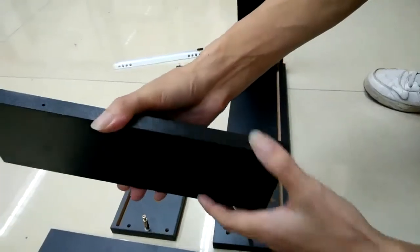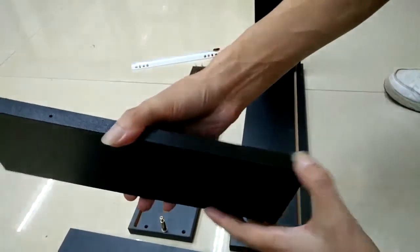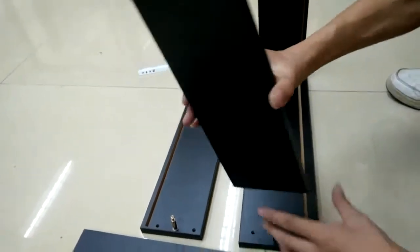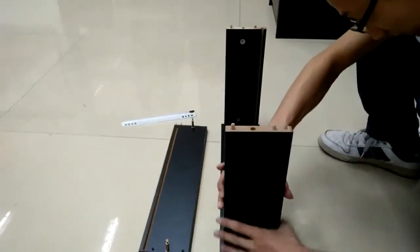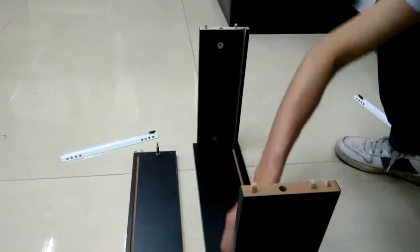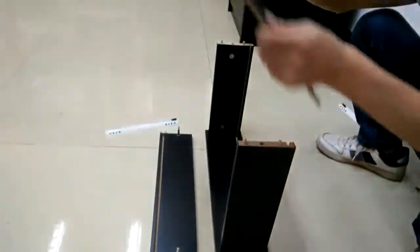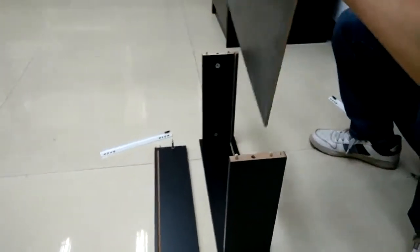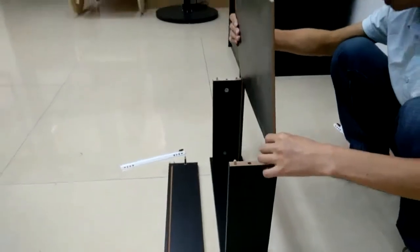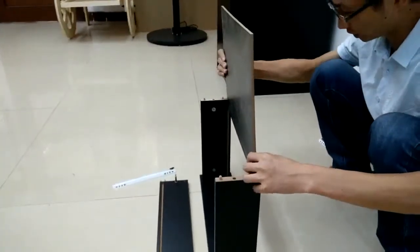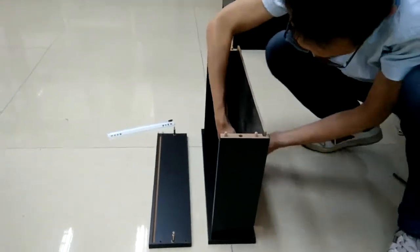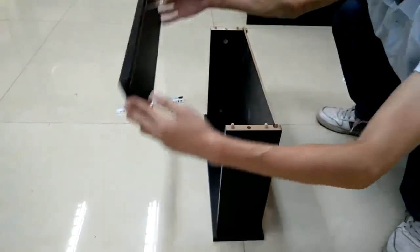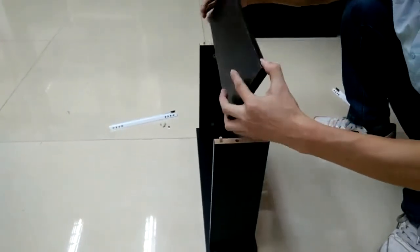Now we start to assemble them together. Once again, make sure the pilot holes face the correct direction. Now you can slide the bottom panel through the slot. If you have any questions or troubles, feel free to email us at cs@fixturedisplays.com.